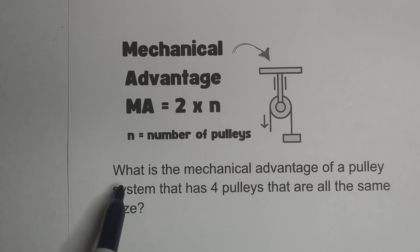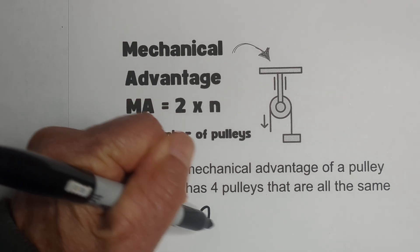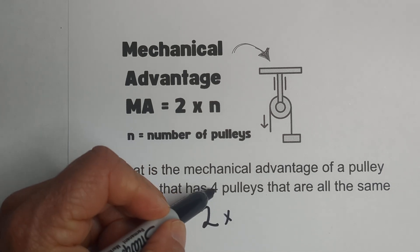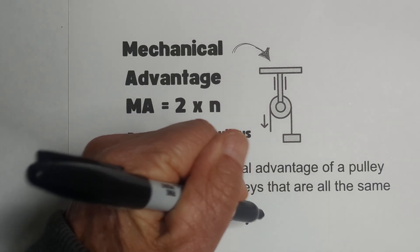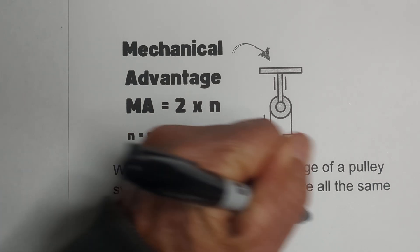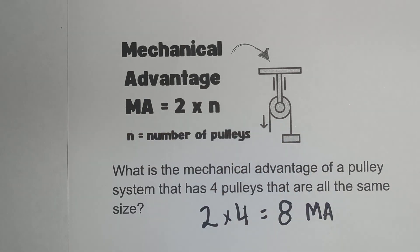So here's an example. What's the mechanical advantage of a pulley system that has 4 pulleys that are all the same size? So we're going to go 2, and we're going to plug 4 in for n, and 2 times 4 is 8. That is the mechanical advantage.